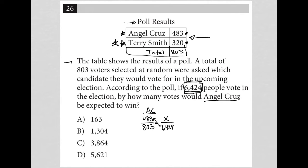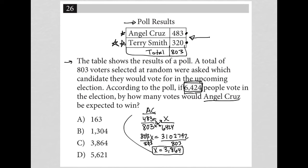To solve for X, I can just cross-multiply. So I'd be left with 803X equal to — going to my calculator — 483 times 6,424, which equals 3,102,792. Then I divide both sides by 803, and I get X equal to 3,864. That's the number of votes we expect for Angel Cruz.